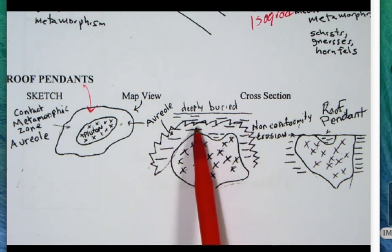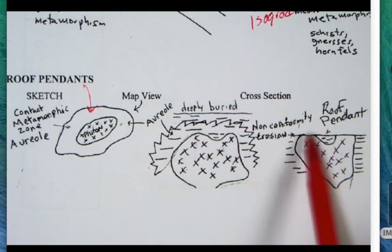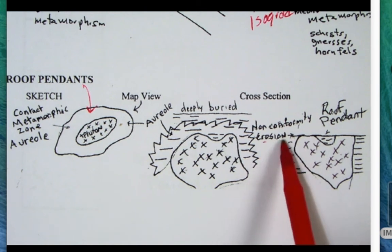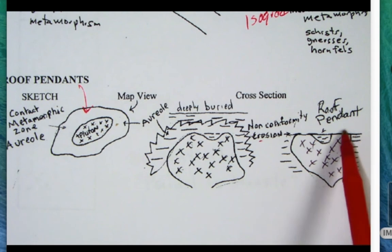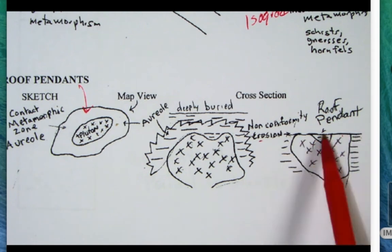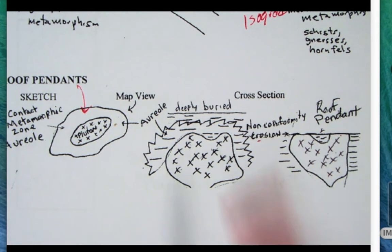Future erosion—here's an erosion surface—is going to strip off these other rocks and expose that pluton plus the roof pendant rocks at the surface. That's how we get these roof pendants, and in the high Sierra they're very common.